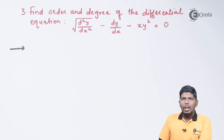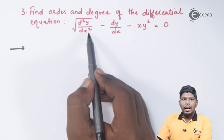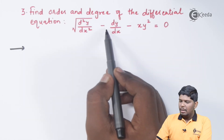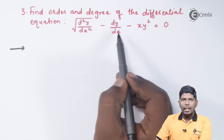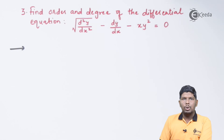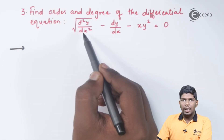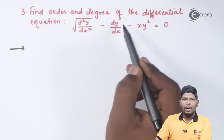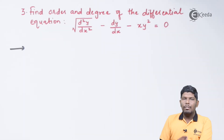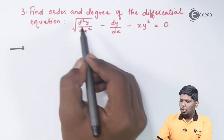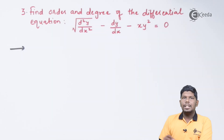Find the order and degree of the differential equation √(d²y/dx²) - dy/dx - xy² = 0. Here we have a second order derivative and a first order derivative, so the order is 2. But to find the degree, we must eliminate the rational power — the square root must be removed.